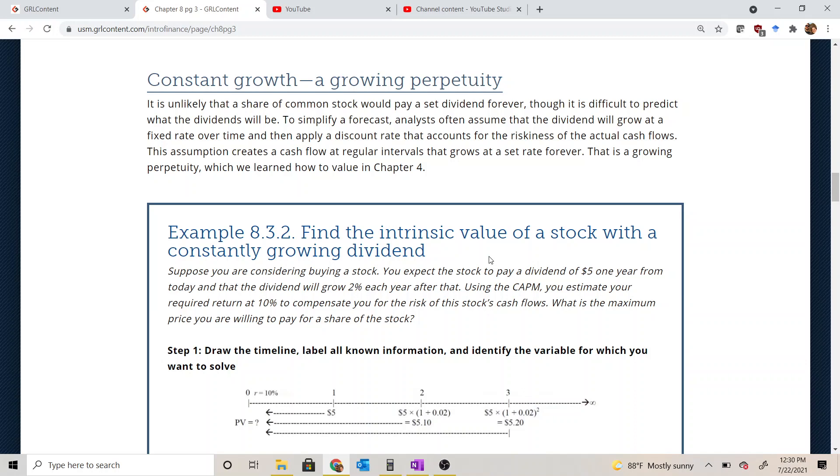We are, in this chapter, looking at ways to value stock. We're looking at two different models. The first one is the Dividend Discount Model, often abbreviated DDM. And it does exactly what it sounds like. With the Dividend Discount Model, we forecast out the expected future dividends and discount them back to present value using a discount rate that accounts for the risk of those cash flows. And we find the present value of them, and that becomes our intrinsic value of the stock.